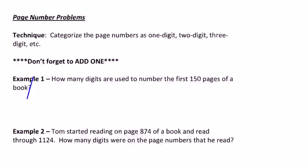The key strategy for this is just to go ahead and categorize the page numbers as one digit, two digit, or three digit, four digit, five digit. And then we count the number in each of those categories and then multiply by the number of digits.